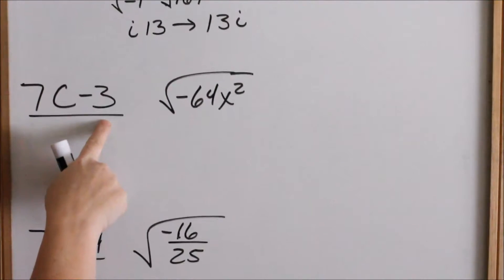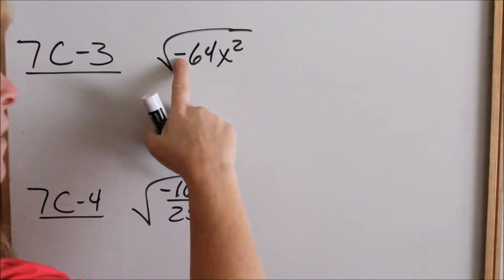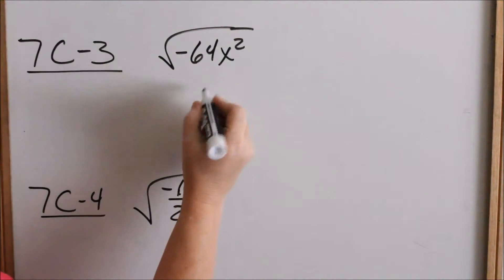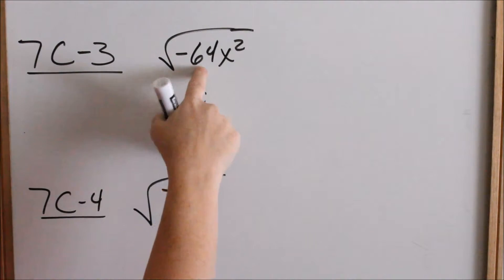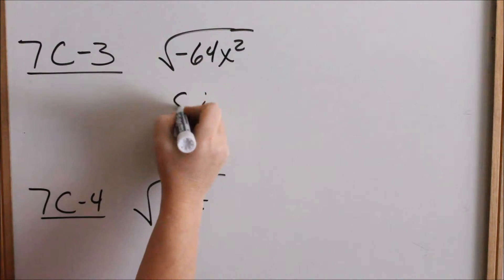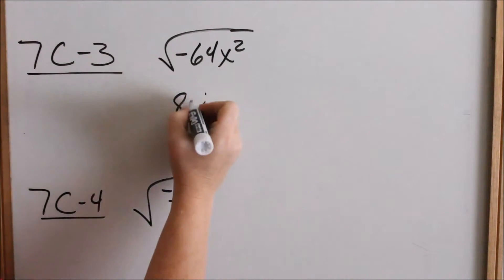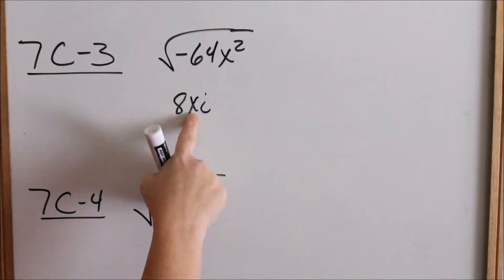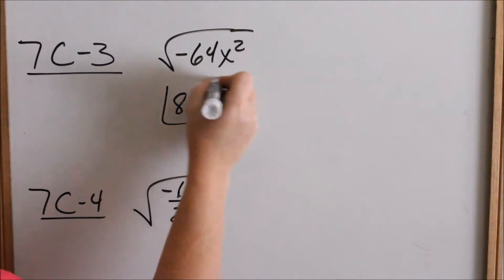Look at 7c3. The negative under the radical comes out as an imaginary number, so I know I'm going to have an i. Then I take the square root of 64, which is 8, and then I take the square root of x squared, which is x. The order is: numbers, then letters, then imaginary numbers — that's the order you put everything in.